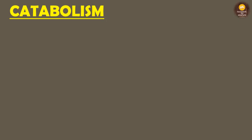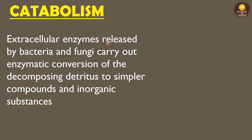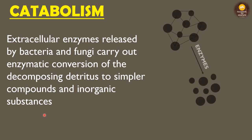The third step is catabolism. In catabolism, extracellular enzymes — enzymes present outside the cell — are released by bacteria and fungi. These carry out enzymatic conversion of the decomposing detritus into simpler compounds and inorganic substances. So a complex compound, in the presence of these enzymes, is converted into simpler inorganic substances.